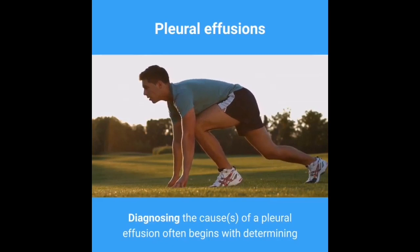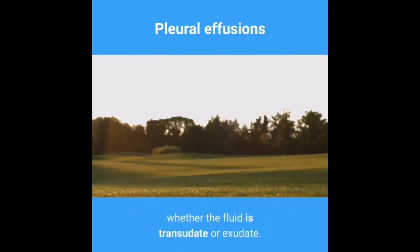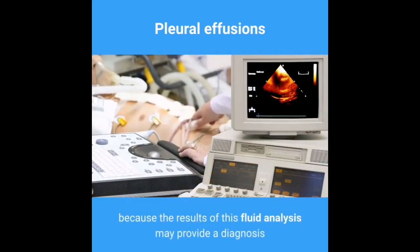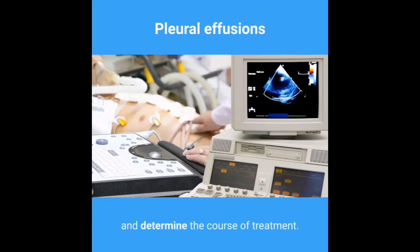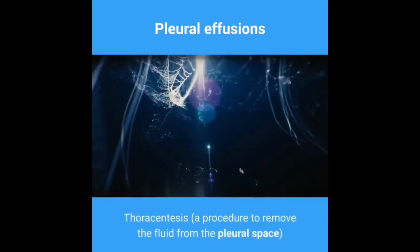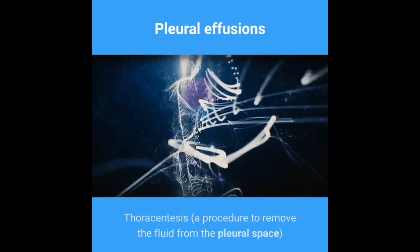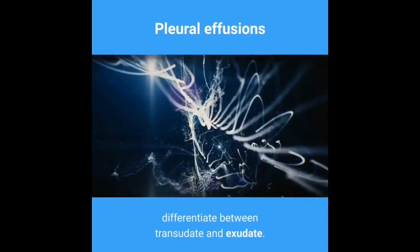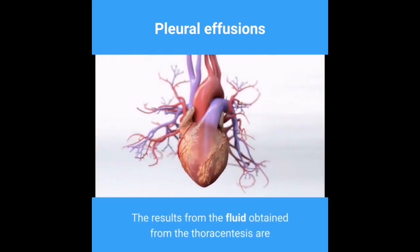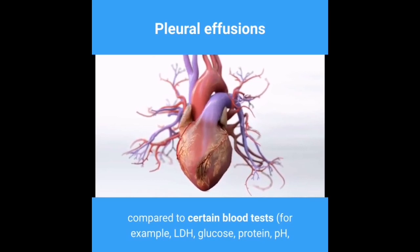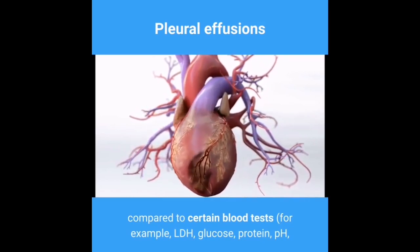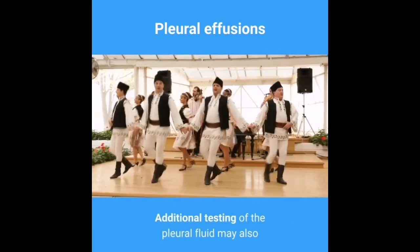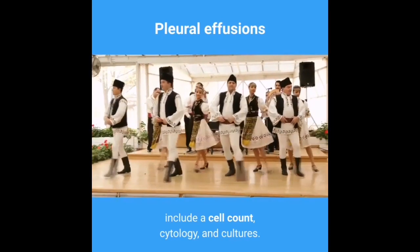Diagnosing the causes of a pleural effusion often begins with determining whether the fluid is transudate or exudate, as this fluid analysis may provide a diagnosis and determine the course of treatment. Thoracentesis — a procedure to remove fluid from the pleural space — followed by laboratory analysis can differentiate between transudate and exudate. The results are compared to blood tests such as LDH, glucose, protein, pH, and cholesterol. Additional testing of the pleural fluid may also include a cell count, cytology, and cultures.